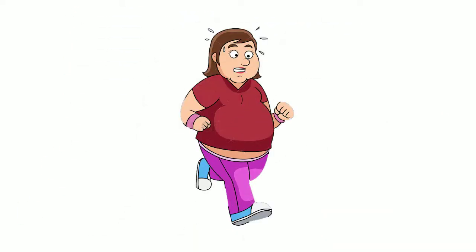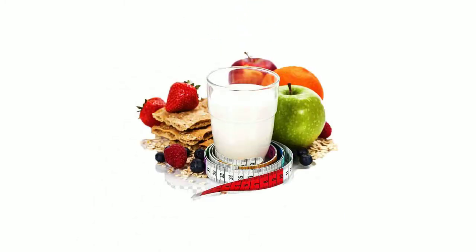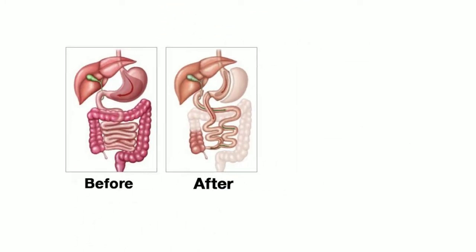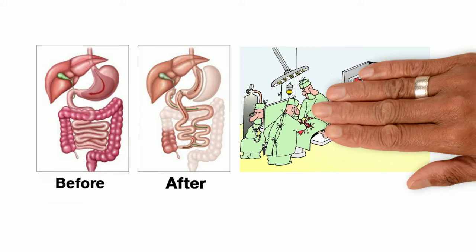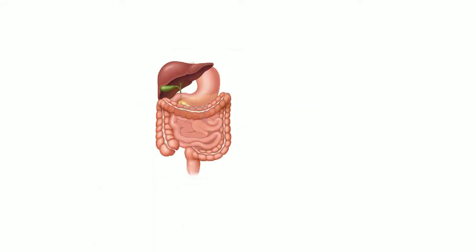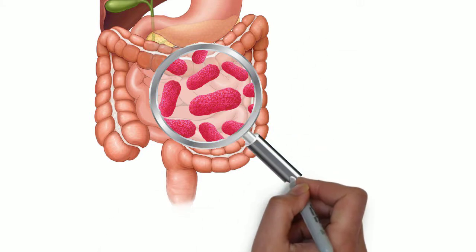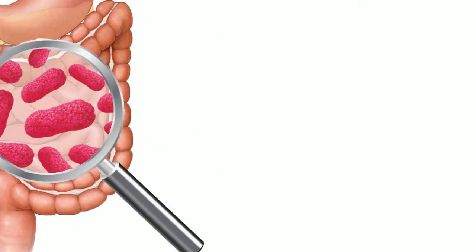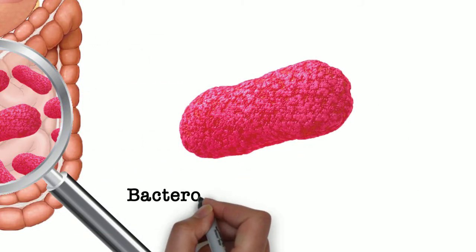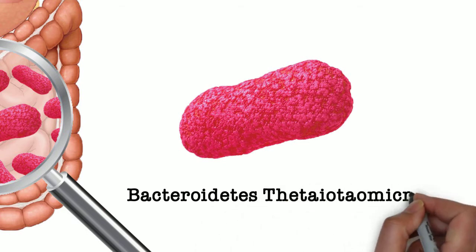Sandy tried exercising and dieting but could not sustain it. She is too afraid to try bariatric surgery with the attached surgery risk. Sandy made her first million because she discovered that our gut microbiome is the key — and the answer is this gram-negative gut microbe bacteria, Bacteroides thetaiotaomicron. Let's just call it Bt for short.